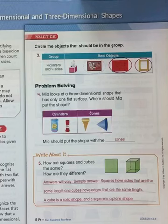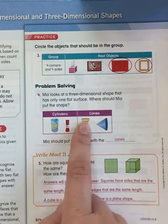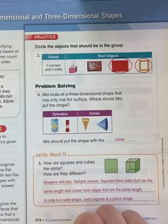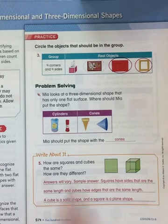Look at number four. Mia looks at a three-dimensional shape that has only one flat surface. Where should Mia put the shape? Cylinders have two flat surfaces, but cones have one flat surface, so Mia should put the shape with the cones for only having one flat surface.